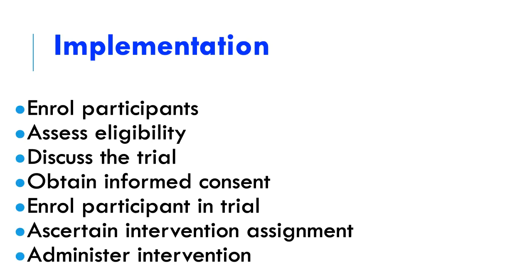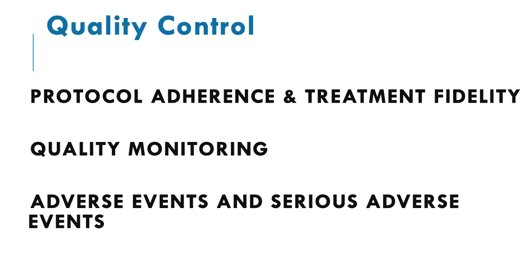How to implement an RCT: enroll the participants, assess eligibility, discuss the trial, obtain proper informed consent, and divide the patients into two groups. To perform a good RCT, use quality control methods. An important step is to report serious adverse events to the investigator.